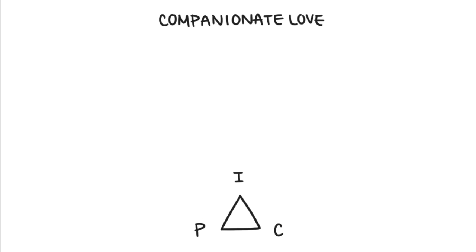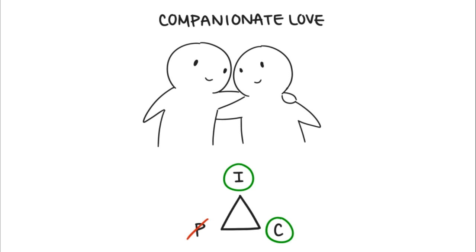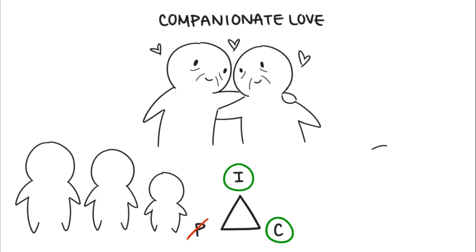Six: companionate love. Companionate love is characterized by a combination of intimacy and commitment and the absence of passion. It's stronger than friendship love because of the addition of commitment. It's observed in long-term marriages, where you don't necessarily need passion in order to stay in love with your partner, because affection still remains. Companionate love can also be found among family members and close friends who have strong platonic friendships.